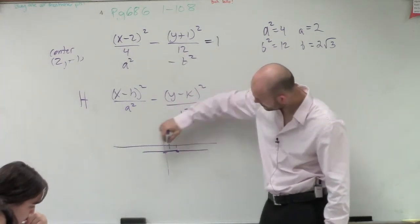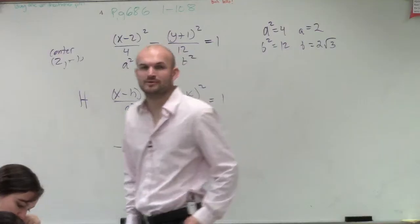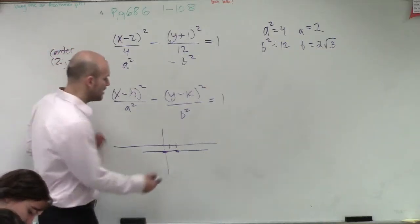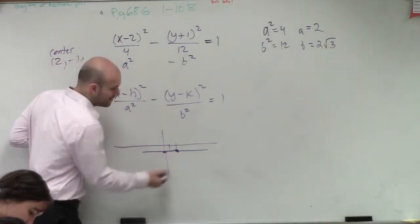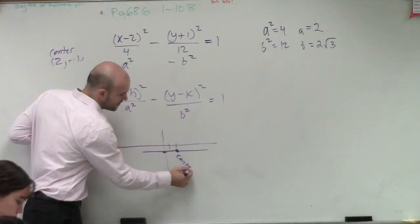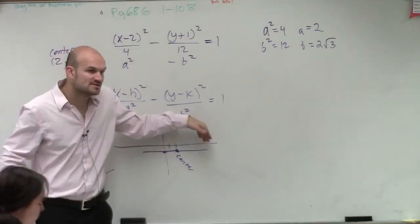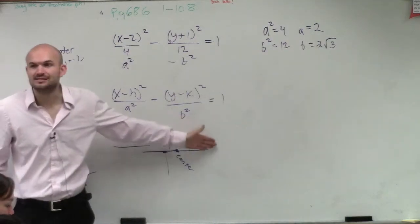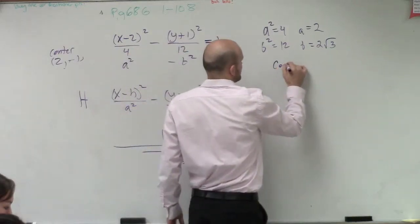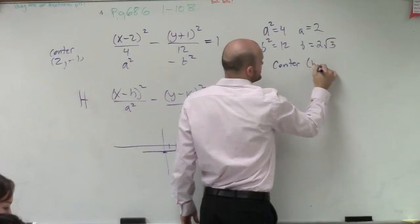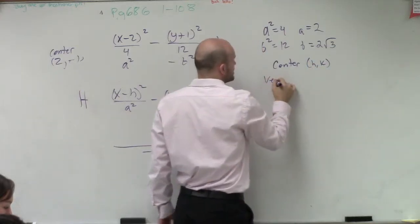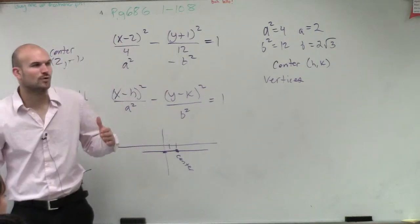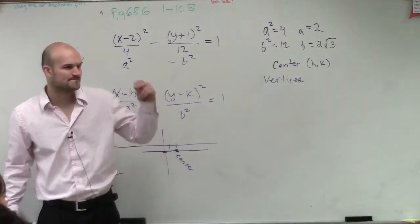All right. So now what we need to do on this transverse axis is find our foci and center. So ladies and gentlemen, we know this is our center. We know that the foci and the vertices all lie on this line. So if we know the center is h comma k, the vertices, remember the vertices is the distance of what from the center? Hazel.